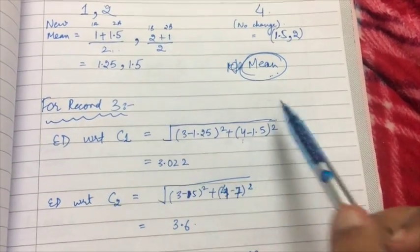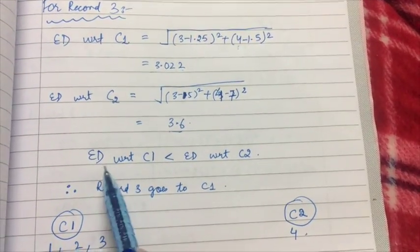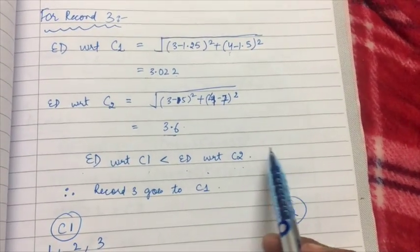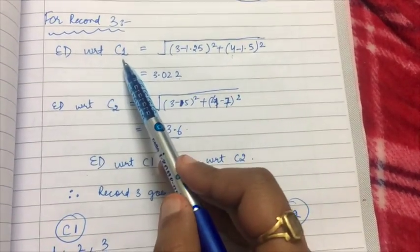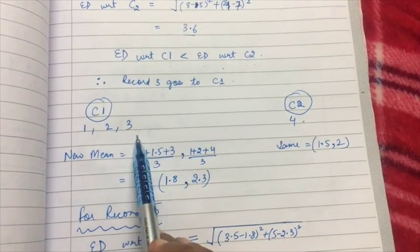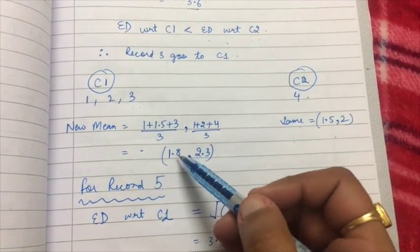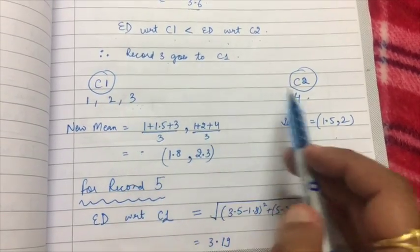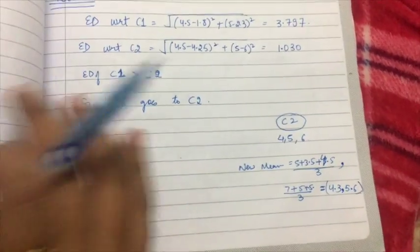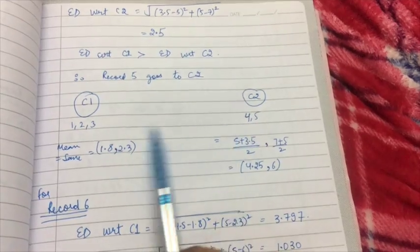I find that the Euclidean distance of record three from cluster one is less than its distance from cluster two, so record three is more similar to cluster one — I add record three to cluster one. Again, there's a change in cluster one so I find the new mean; the mean for cluster two remains the same. Next, for record five, I find that record five will go to cluster two.